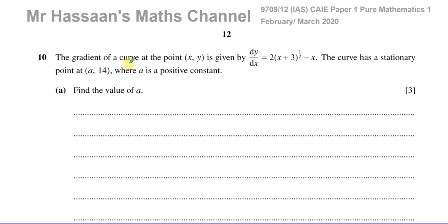The gradient of a curve at the point (x, y) is given by dy/dx equals 2 times (x + 3) to the power of a half, minus x. The curve has a stationary point at (a, 14) where a is a positive constant. Find the value of a.